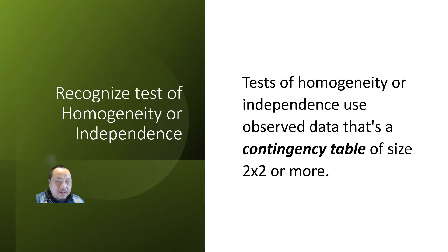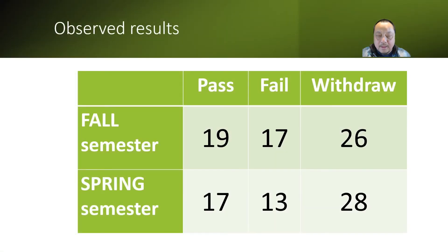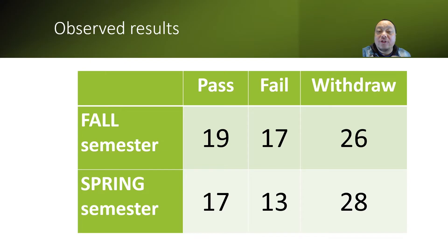Let's write it down as a rule. Tests of homogeneity or independence use observed data that's a contingency table of size 2×2 or more. That's the difference with goodness of fit. So far so good? Now, do I know if this is homogeneity or independence? No, I do not. To distinguish between homogeneity and independence, I need to read the text of the question to see where the observed data came from. Just looking at the contingency table, I can only say there is not goodness of fit — I cannot tell between homogeneity and independence.